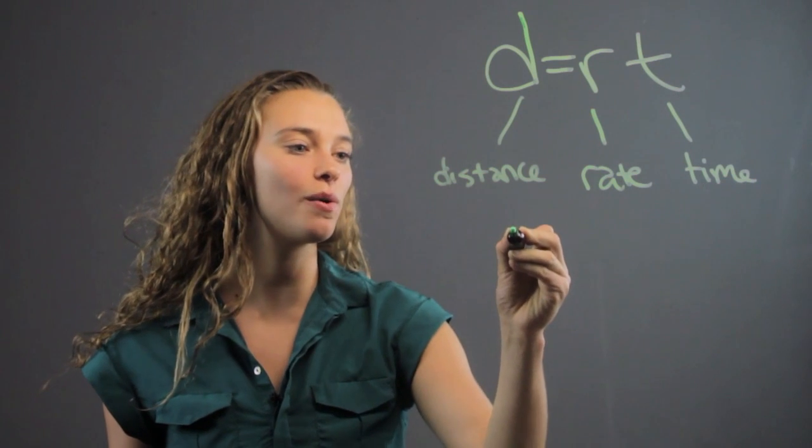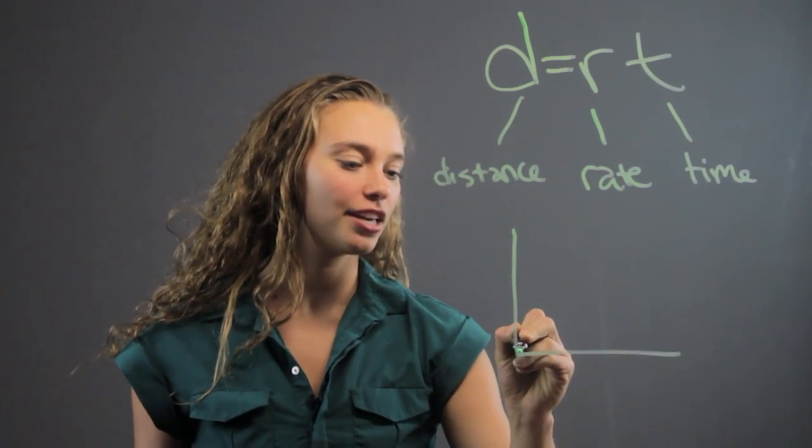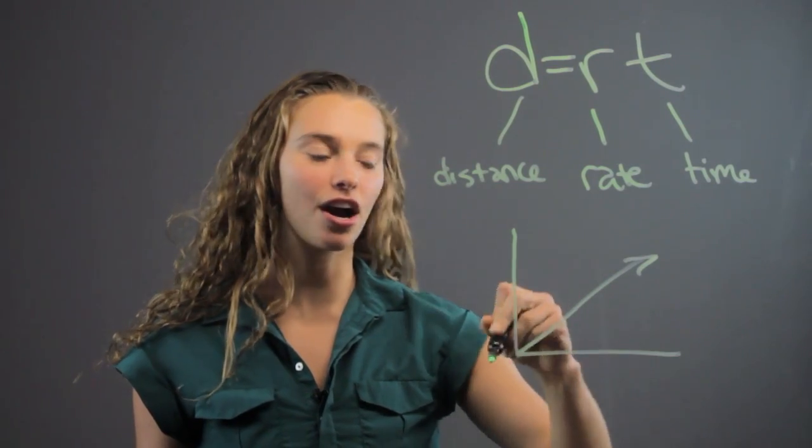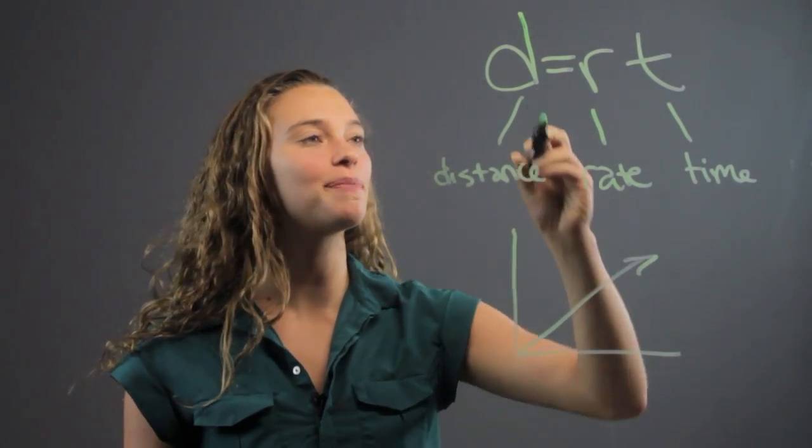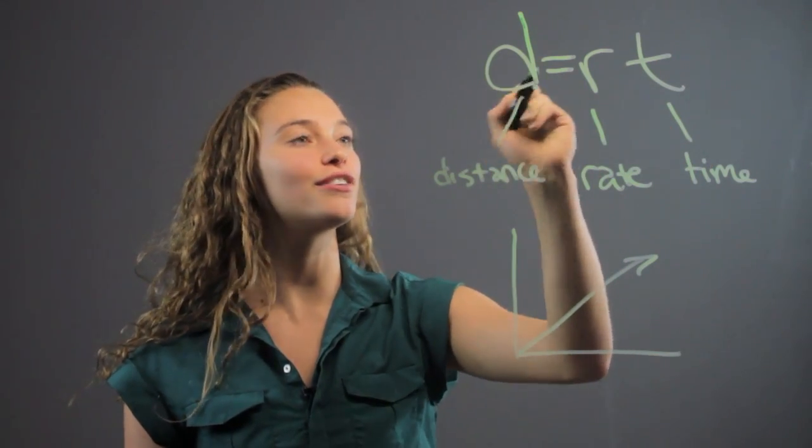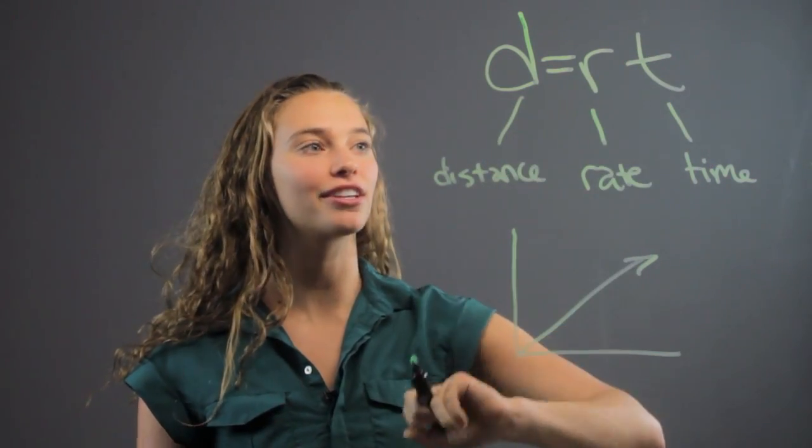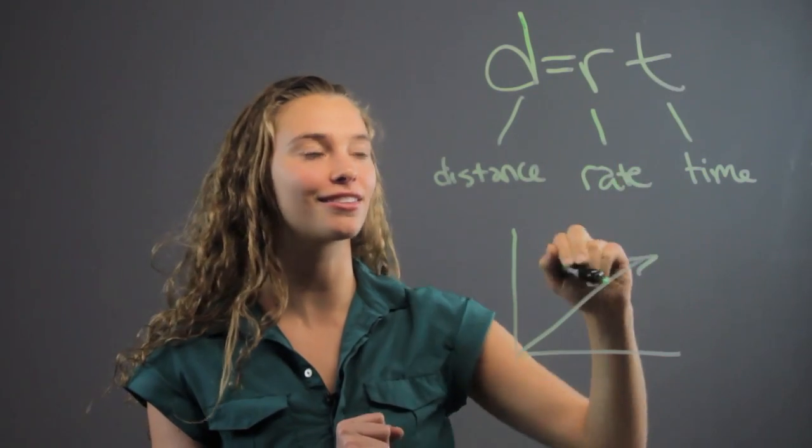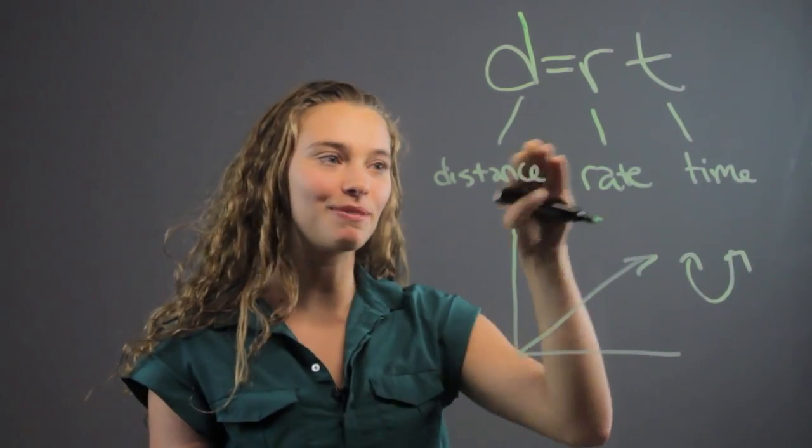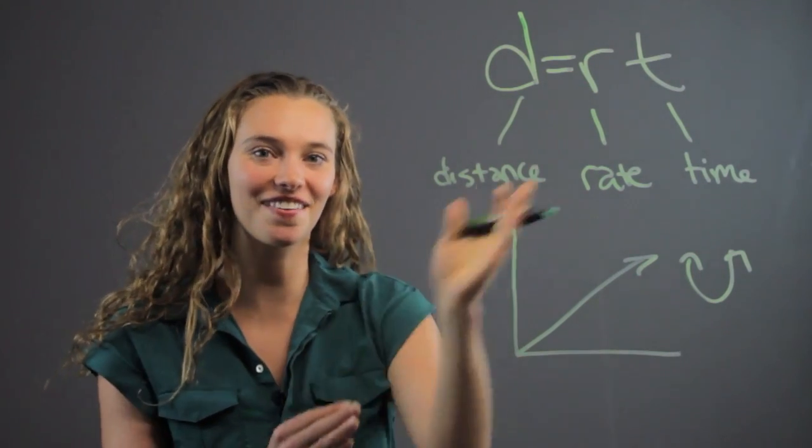Whatever it is, you can always graph that as a line showing the distance. D equals RT. It's always graphable because this is a linear equation. Everything is to the first power. There's no other exponents, second or third, so it's not going to be a parabola or some weird shape. It'll always be some sort of straight line showing the distance.